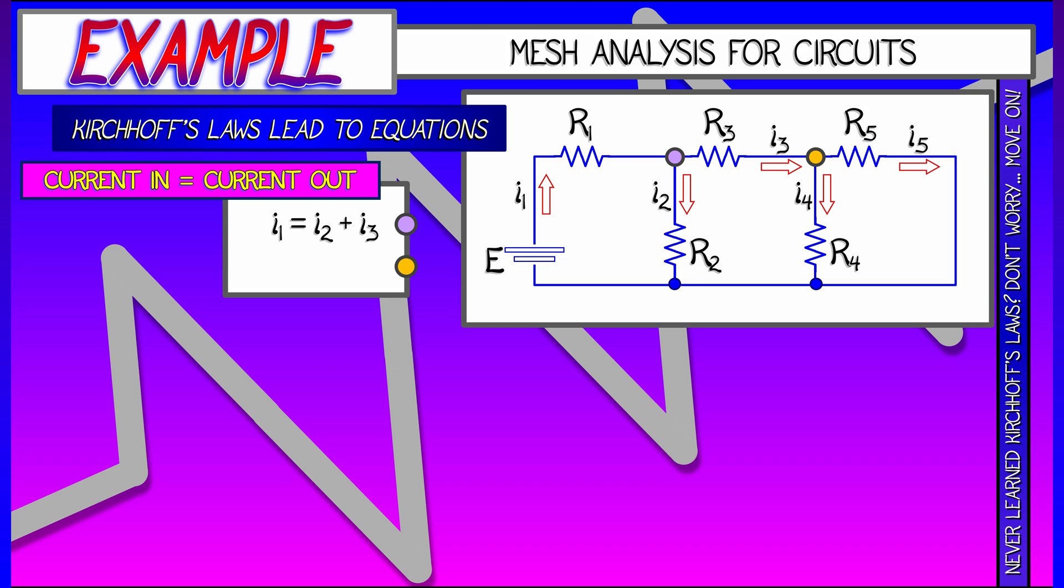Now, do the same thing at another node. Let's say that orange one right there. What that's going to tell you is the current in I3 is equal to the net current out, I4 plus I5.